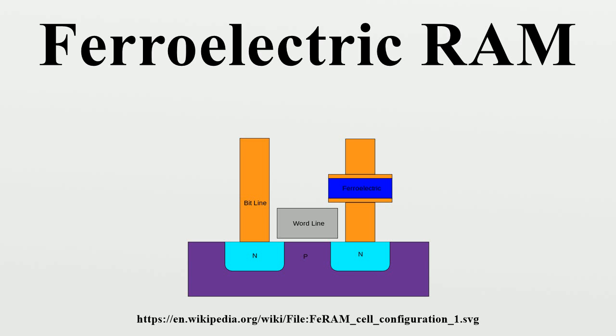The 1T1C storage cell design in FeRAM is similar in construction to the storage cell in widely used DRAM in that both cell types include one capacitor and one access transistor. In a DRAM cell capacitor, a linear dielectric is used, whereas in FeRAM cell capacitor the dielectric structure includes ferroelectric material, typically lead zirconate titanate.